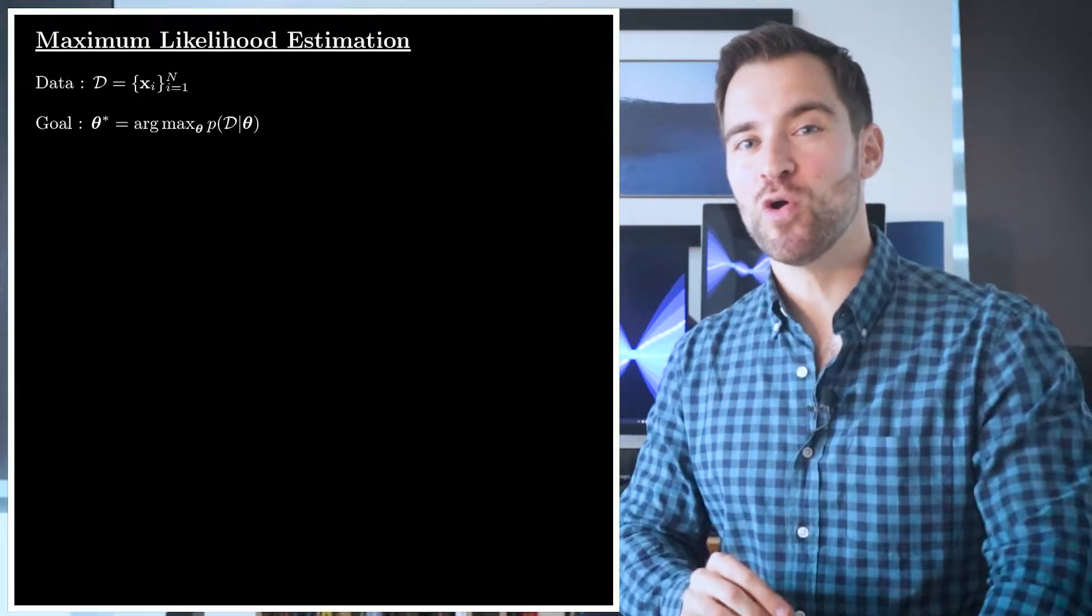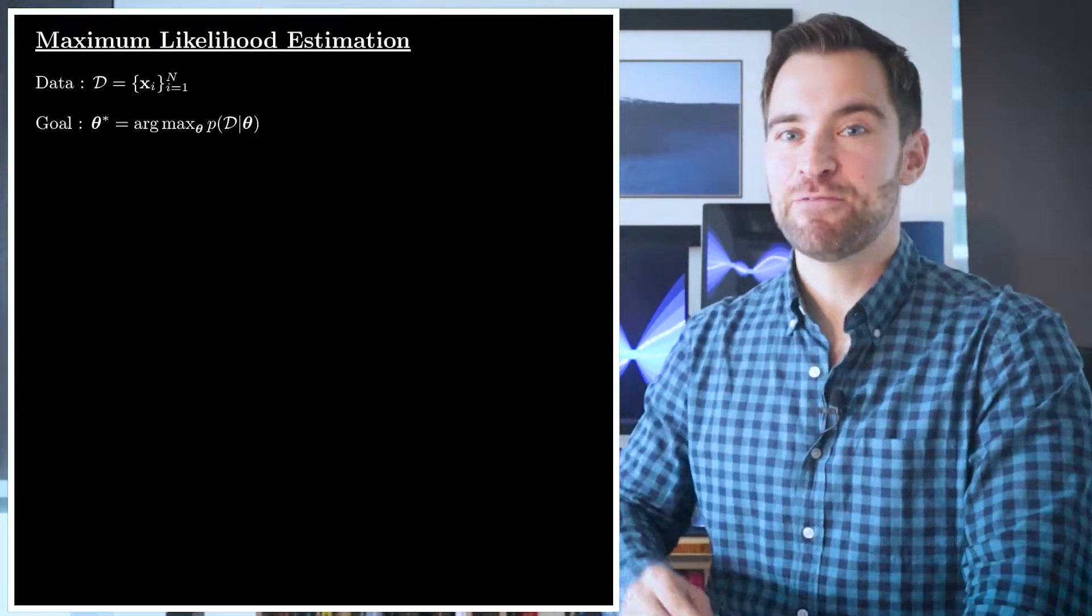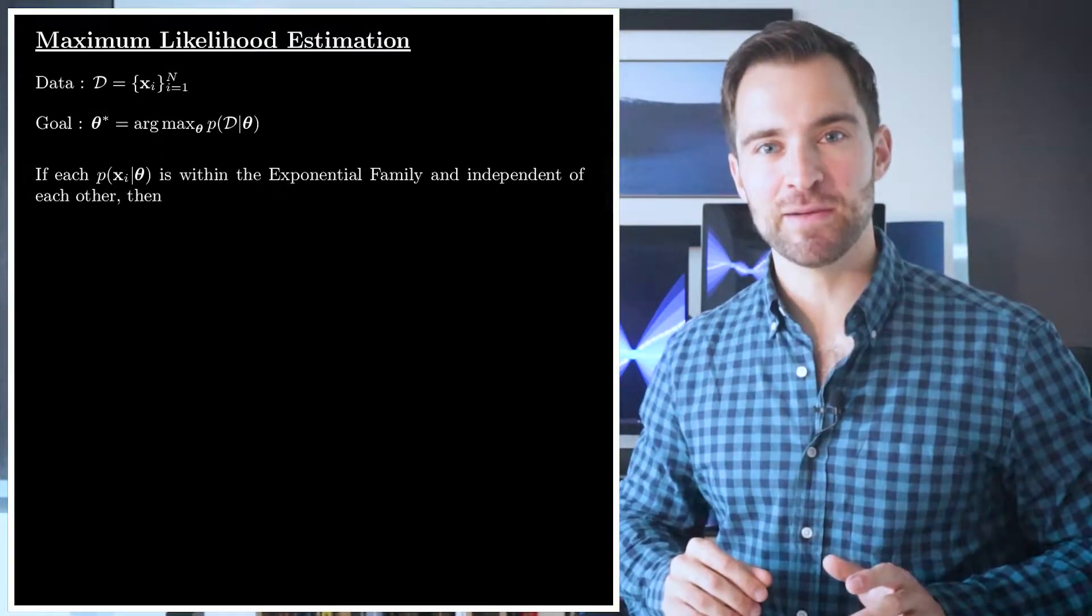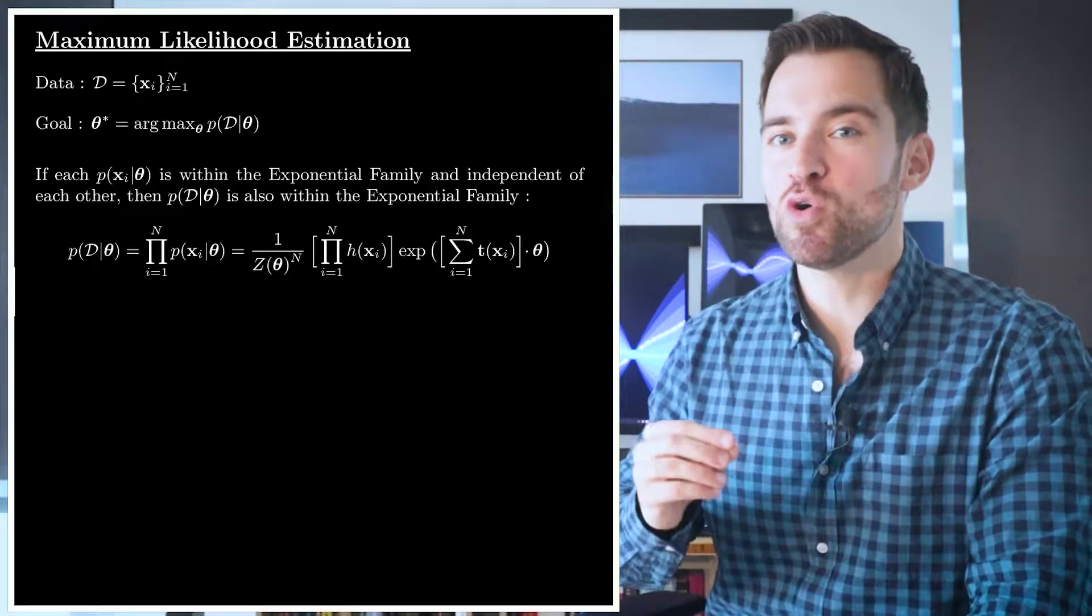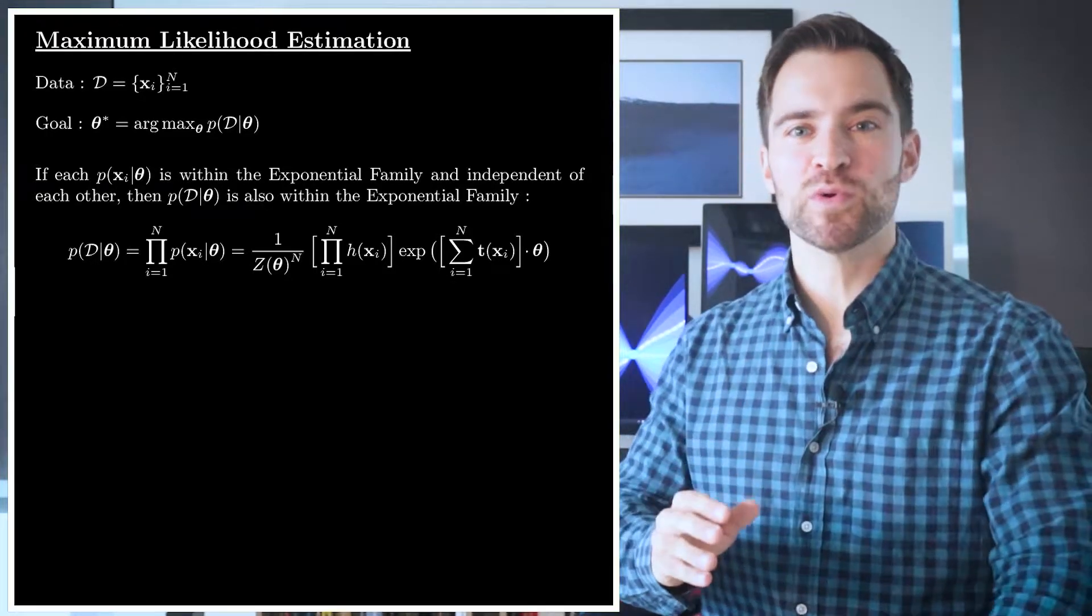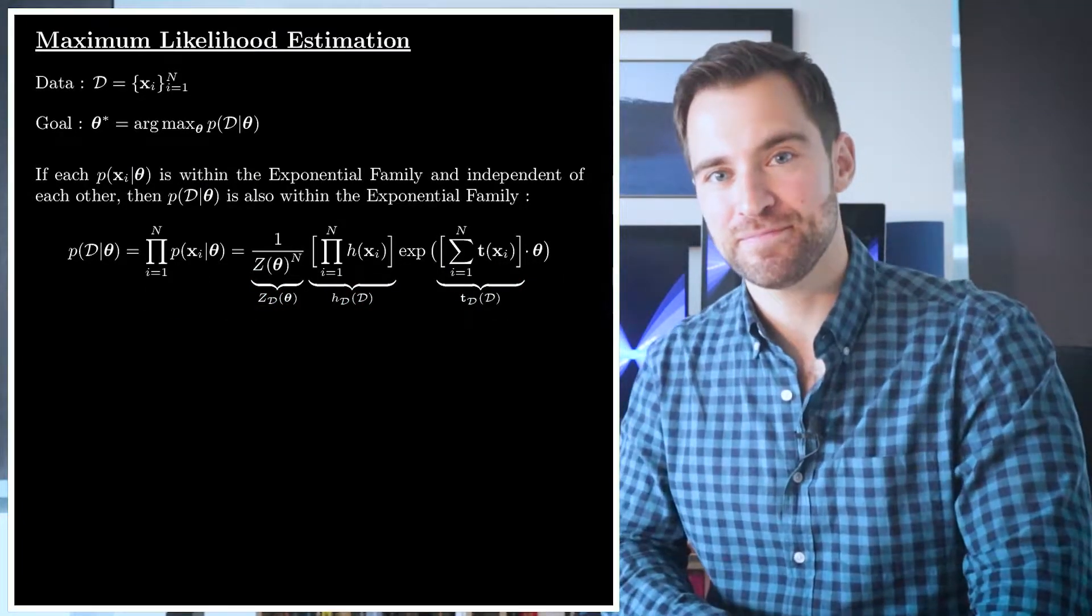Our goal is to find the θ that makes the data most likely. To do that, as you may know, we need to form the likelihood function. Now, here's the convenient thing. If we assume the distribution of each xi is from the exponential family and they're independent of each other, then the distribution of the whole dataset is also from the exponential family.